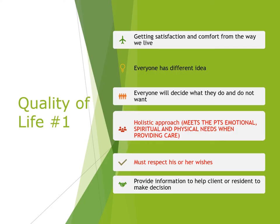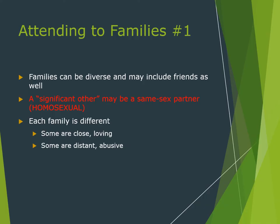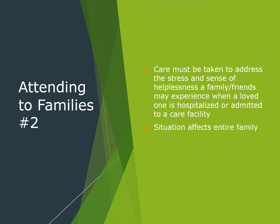Quality of life is getting satisfaction and comfort from the way we live. Everyone has a different idea and will decide what they do and do not want. The holistic approach meets the patient's emotional, spiritual, and physical needs; you must respect the person's wishes and provide information to help them make decisions. Families can be diverse and may include friends and significant others, including same-sex partners. Each family is different — some are close and loving, some distant. Care must be taken to address the stress and helplessness a family may experience when a loved one is hospitalized, as the situation affects the entire family.